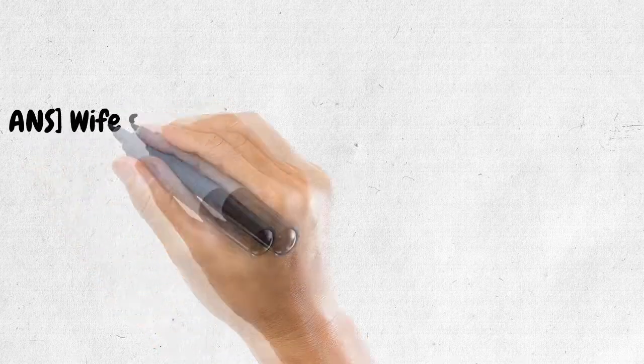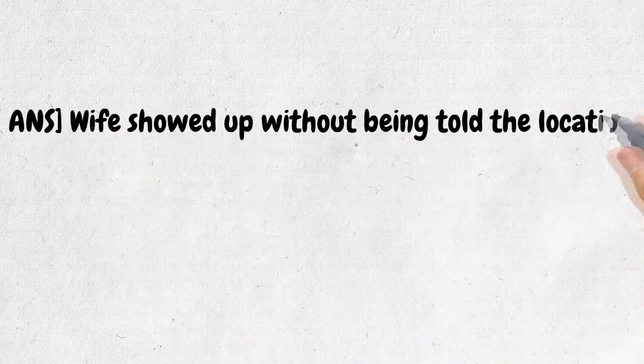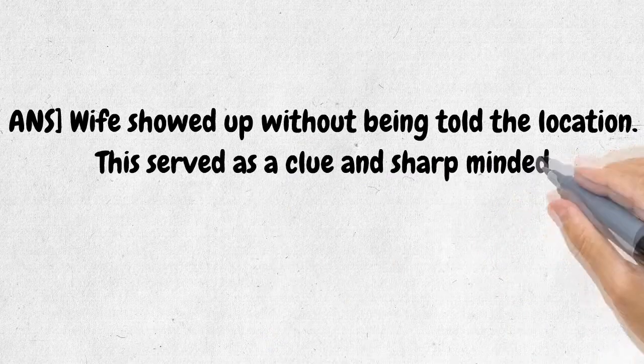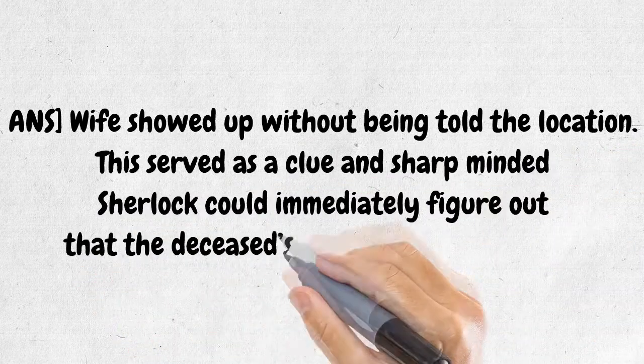Sixth Answer. The wife showed up without being told the location. This served as a clue and sharp-minded Sherlock would immediately figure out that the deceased's wife was the murderer.